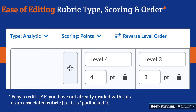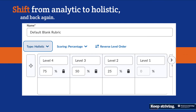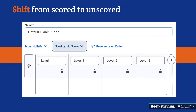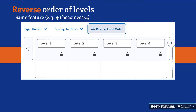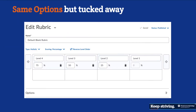Another great feature of the new design is that you can now shift from analytic to holistic and back again. Editing is simply a matter of using dropdown arrows — click the arrow to switch to analytic, adjust the points, or reverse the level order. It automatically shifts, for example from analytic to holistic, or from percentage to no score, and it can reverse the order of levels.